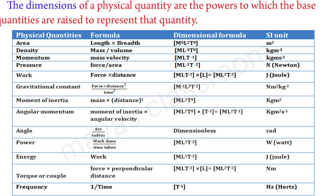For any physical quantity, we learn its dimension formula and SI unit. Area has dimension L², SI unit m². Density is mass divided by volume, giving dimension M L⁻³, and its SI unit is kg/m³. Energy has dimension M L² T⁻², and its SI unit is Joule (J).